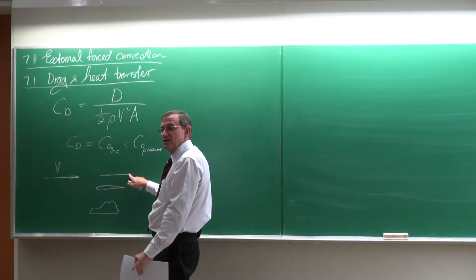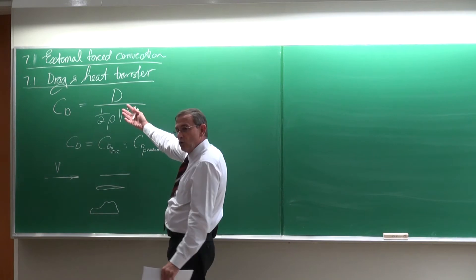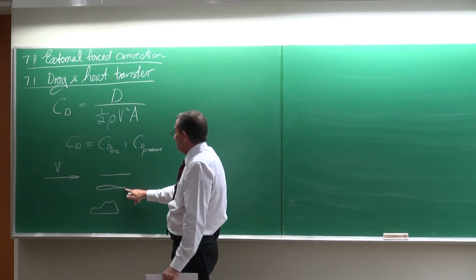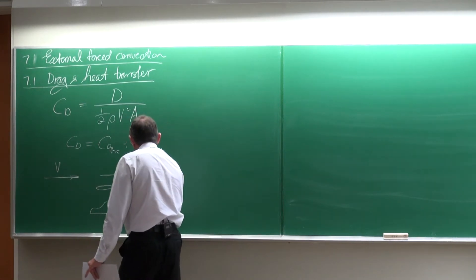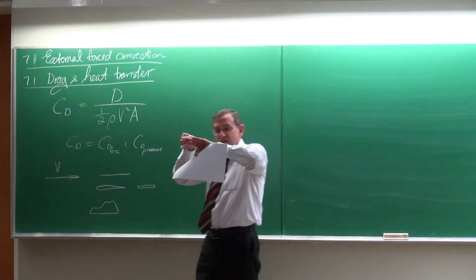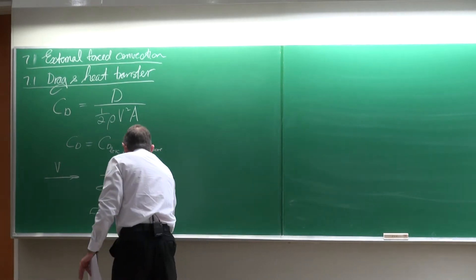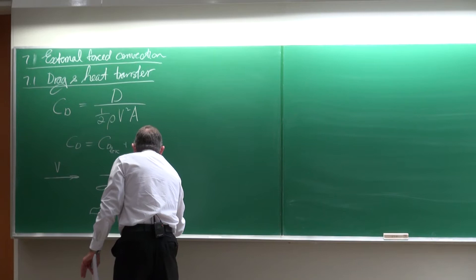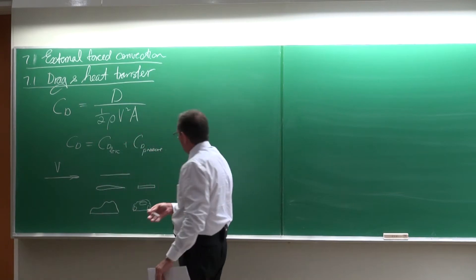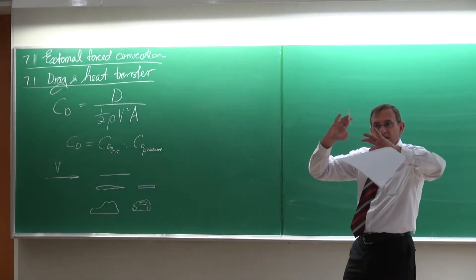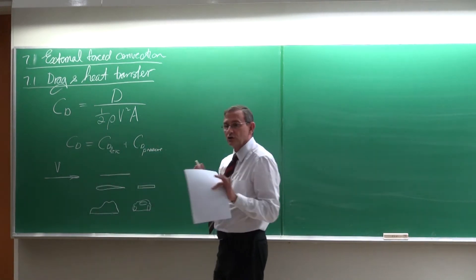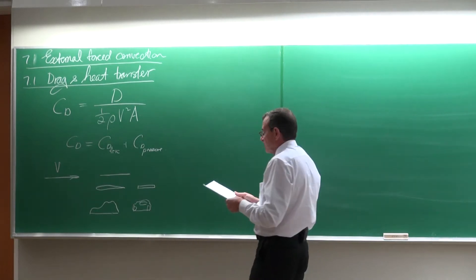Normally when you get this drag coefficient in tables or graphs, it is based on a certain area or dimension. On a flat plate, it is always based on the area of the plate — only one side. If it's an aeroplane wing, it can be only the frontal profile area. For a car it can be the frontal area, or in some cases the total area. So you have to be very careful — you have to make sure which area is being used.